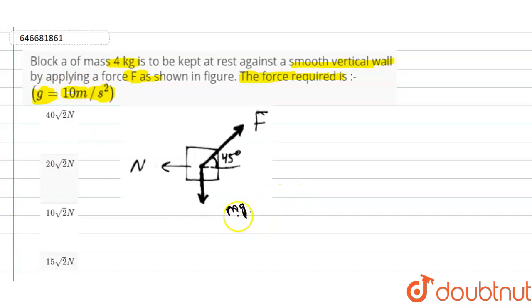This is the free body diagram of the block with the mass of 4 kg and having the angle at 45 degrees. This is the direction of the force F and this is the direction of mg.